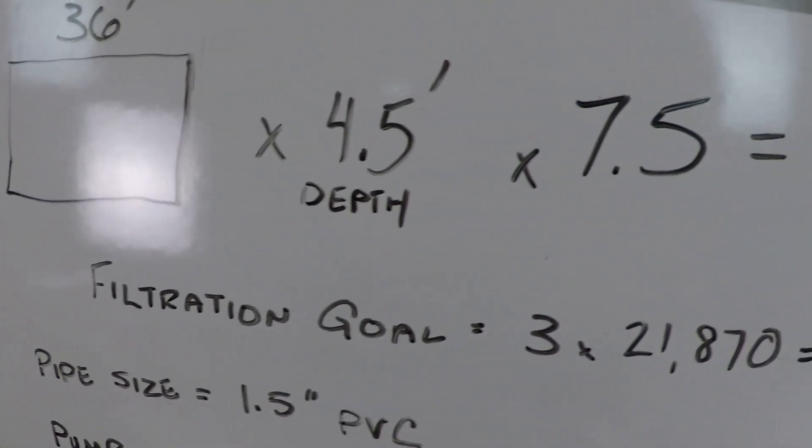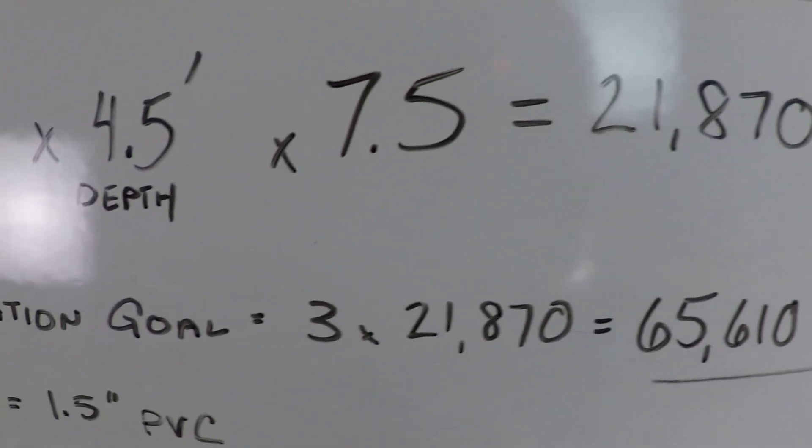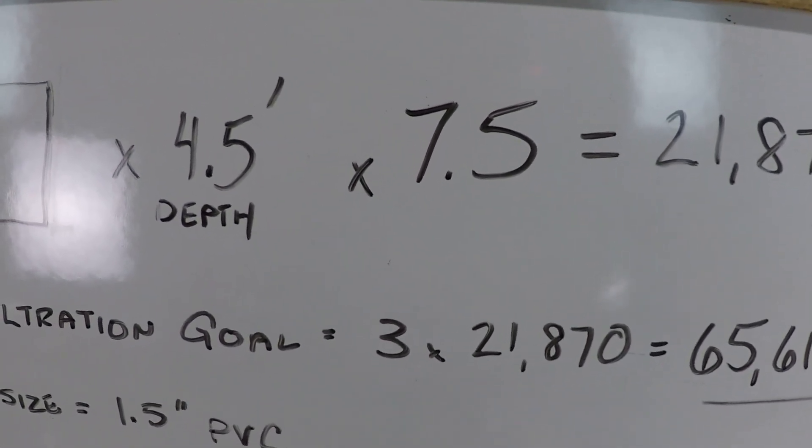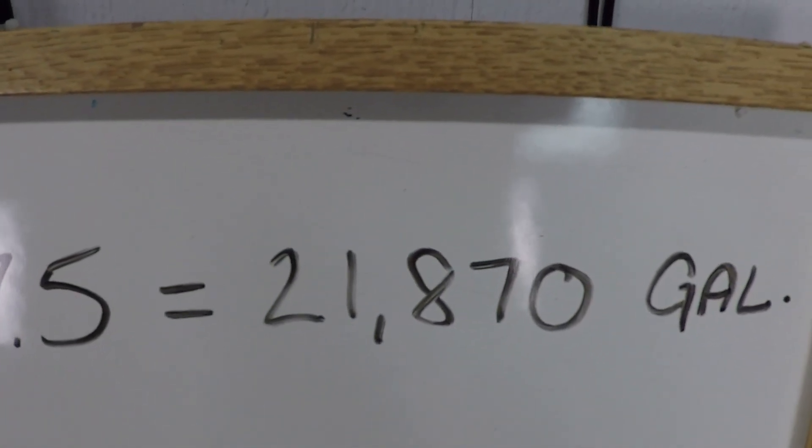That makes our filtration goal 65,610 gallons. Why is that? Well, we want to filter all of the water in the pool every day. In order to do that, you need to filter more than the actual volume of your pool one time.